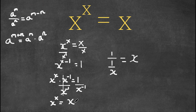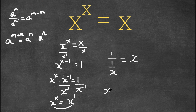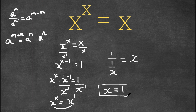So now we get x to the power of x is equal to x. The exponent for x on the right side is actually 1, so we have x to the power of x equals x to the power of 1. Since we have the same bases, our exponents must be equal as well, meaning x equals 1.